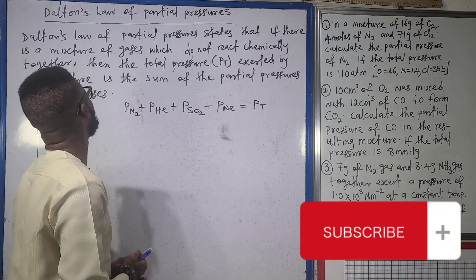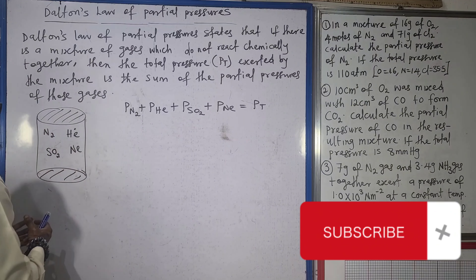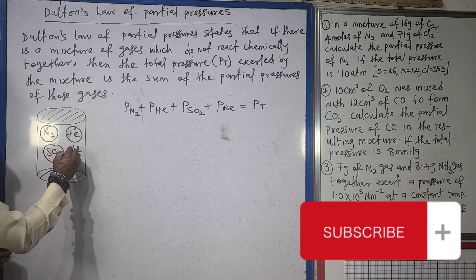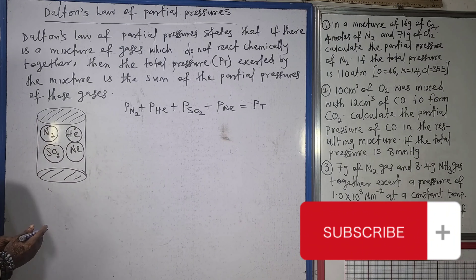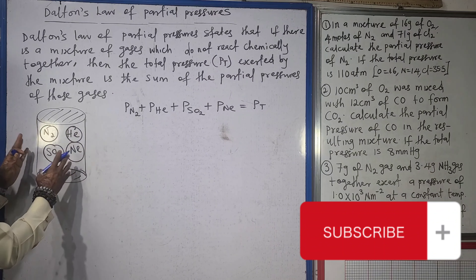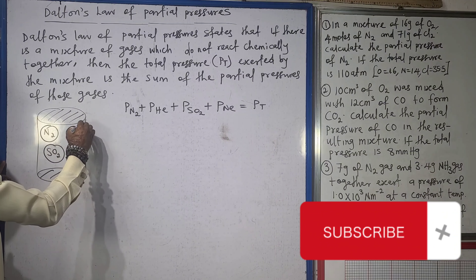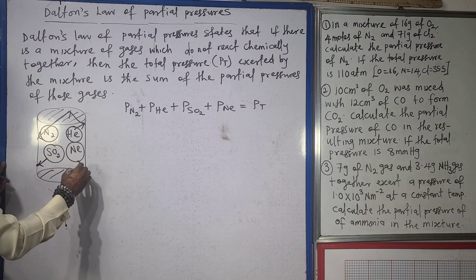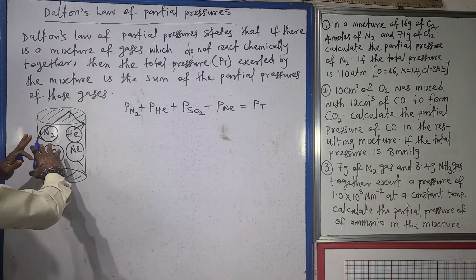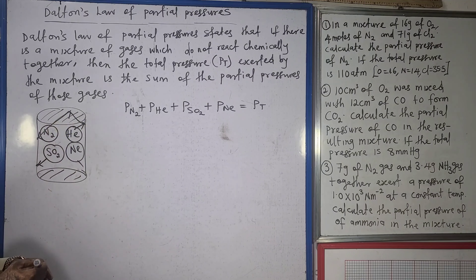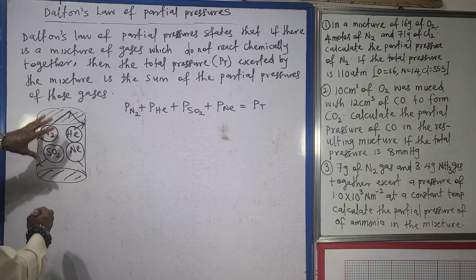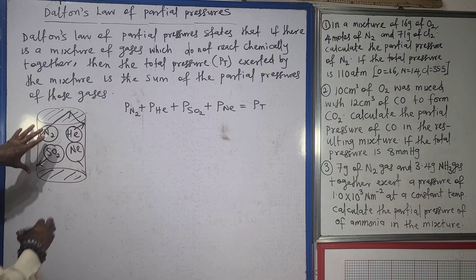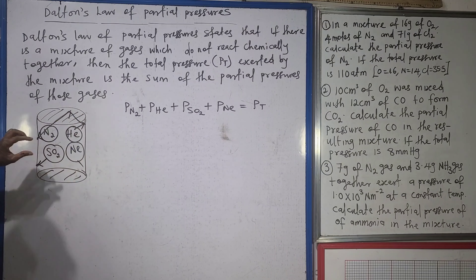When we say Dalton's Law of Partial Pressure, it talks about having mixtures of gases that do not react chemically together. The gases in the mixture are going to bombard the walls of the containing vessel, constituting what we call gas pressure. If we have a mixture of gases that do not react chemically together, then the total pressure in the vessel is the pressure of the individual gases — the partial pressure of the individual gases.